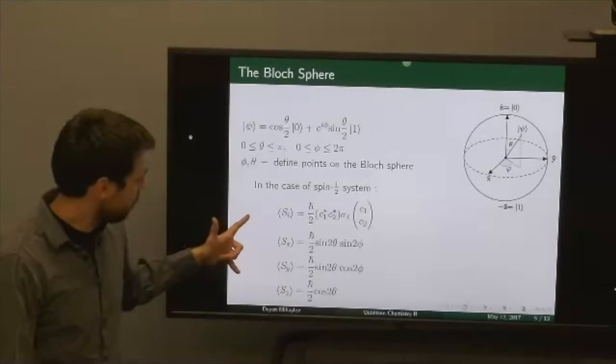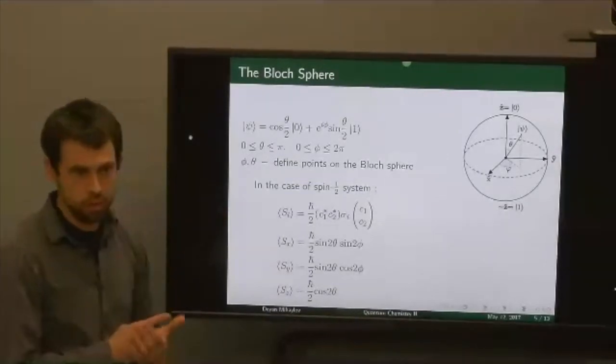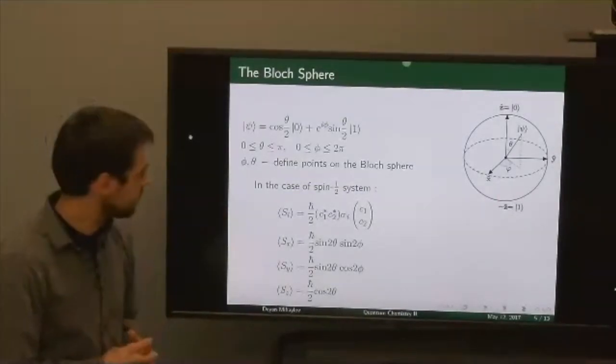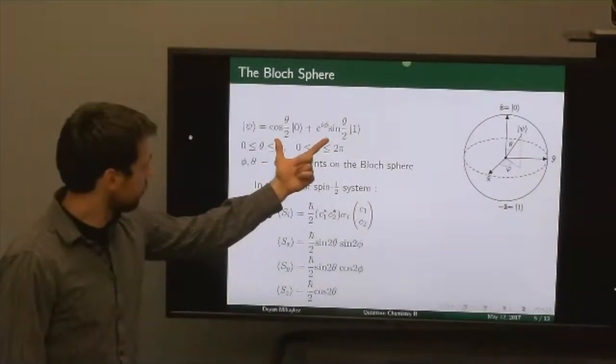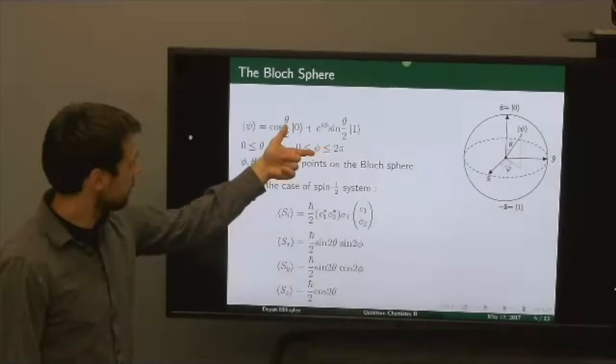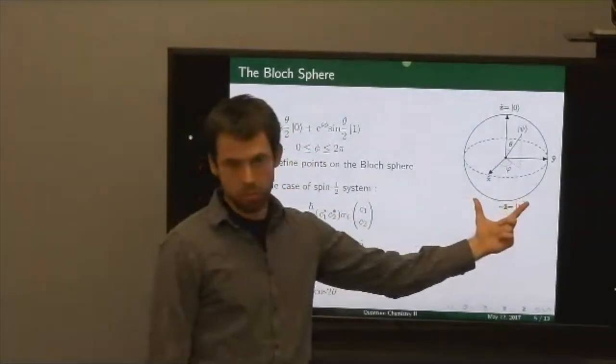But how can you tell which way your total spin projection points? You can just look at the angles theta and phi, which define what's called the Bloch sphere.